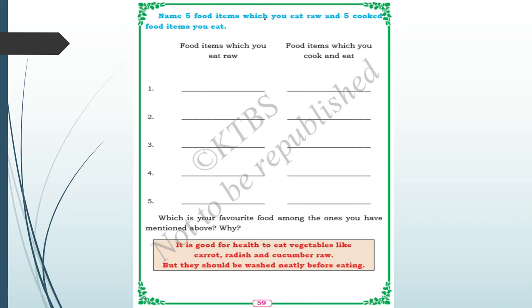Name five food items which you eat raw and five cooked items. Raw items: cucumber, radish, carrot, orange, pineapple. Food items you cook and eat include rice, dal, fish, and meat — we cook and eat those.